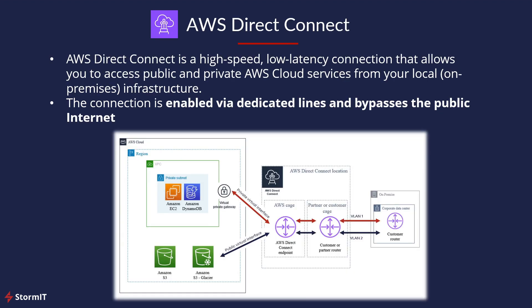AWS Direct Connect is a high-speed, low-latency connection that allows you to access public and private AWS cloud services from your local on-premises infrastructure, like your data center. The connection itself is enabled by dedicated lines and bypasses the public internet. This is the main difference between Direct Connect and Site-to-Site VPN. It will definitely take more time to create AWS Direct Connect — we at Stormit have implemented this in the past and can help you create an AWS Direct Connect connection.